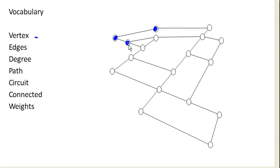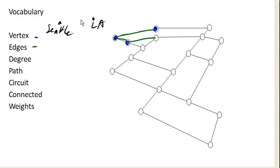Like in our bridges example, a vertex might be representing a city or a location. And then these edges — those are the lines connecting the vertices. Those can represent some kind of connection. So they might be a physical connection, or you could have two cities like Seattle and LA, and an edge connecting them could represent something like a flight path. So an edge is simply representing that there is a connection between those two locations or those two vertices in some way.